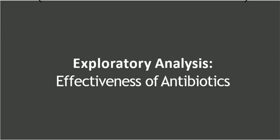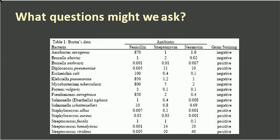When you have this kind of data available, the first concept in exploratory data analysis is that you have to ask questions from the data. For example: what is the penicillin level in different bacteria? What type of bacteria has the greatest amount of penicillin, streptomycin, or neomycin? What does the gram staining tell us? Or: does Brucella abortus have more penicillin than Brucella bronchiseptica? It depends on what column you are using to form your question.